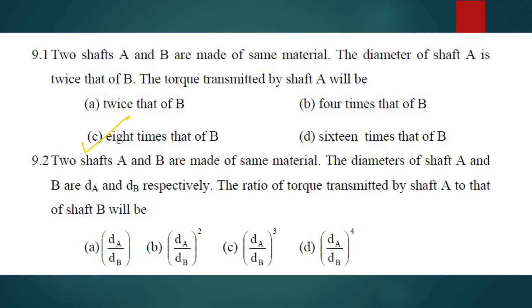For question 2, the ratio of torque transmitted by shaft A to shaft B — TA/TB = (DA/DB)³. C is your answer.